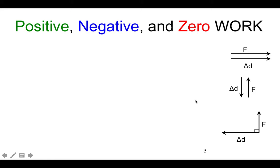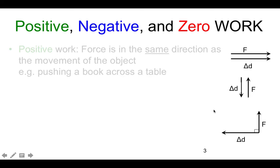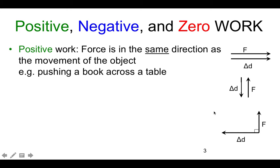We refer to work as either being positive, negative, or zero. If the force is in the same direction as the movement of the object — for example, pushing a book across a table — then this would be considered positive work. The force and the distance are in the same direction: positive.